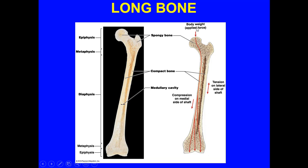One thing to keep in mind is that as body weight is applied and you have an applied force, it goes through the bone with compression on the medial side of the shaft, but tension on the lateral side of the shaft is somewhat relieved. This is what shapes the direction and formation of bone. Notice in the lower part there is a lot of spongy bone — this does not mean empty air pockets; they are filled with bone marrow as well.